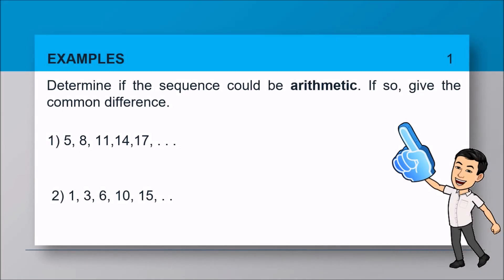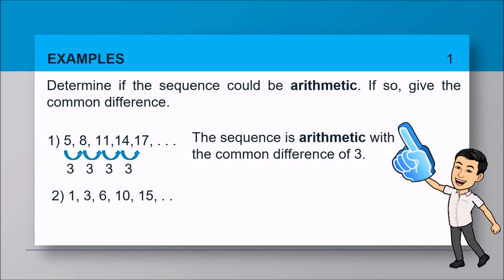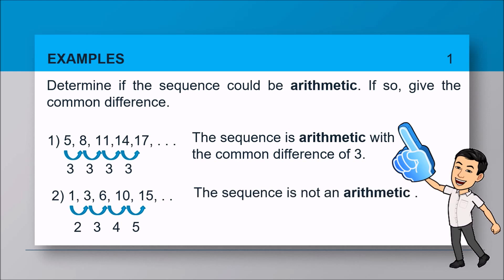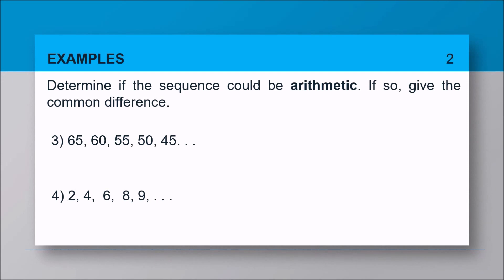More examples: determine if the sequence is arithmetic, and if so, give the common difference. Number one: 5, 8, 11, 14, 17. Checking every two consecutive terms gives the same difference of positive 3, so the sequence is arithmetic with a common difference of 3. For number two, the differences between consecutive terms are not the same, so the sequence is not arithmetic.